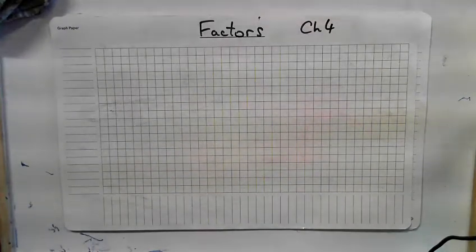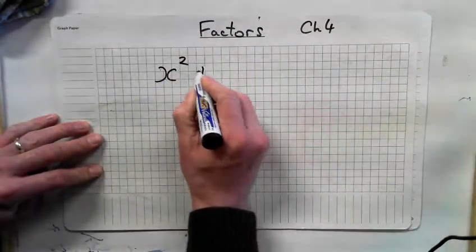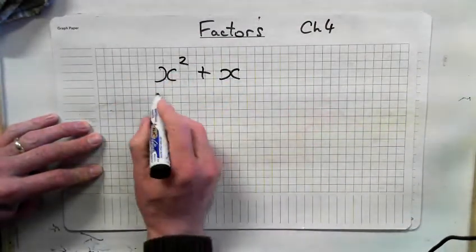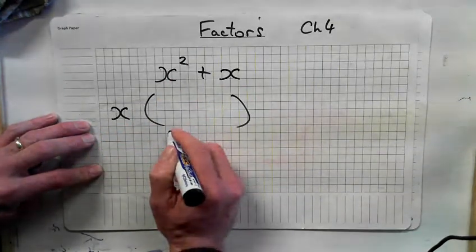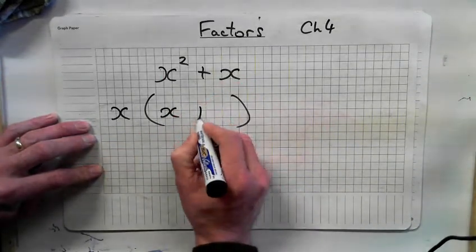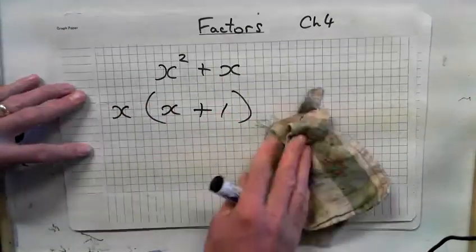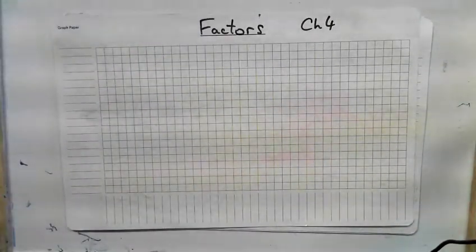Then we moved on, we did a few more examples. So if we do another example of that, what's the factors of this one? Same type of question. What's common to both? X. Look up. X times what is x squared? X. X times what? X plus 1. Very good. That's still the first type that we did.